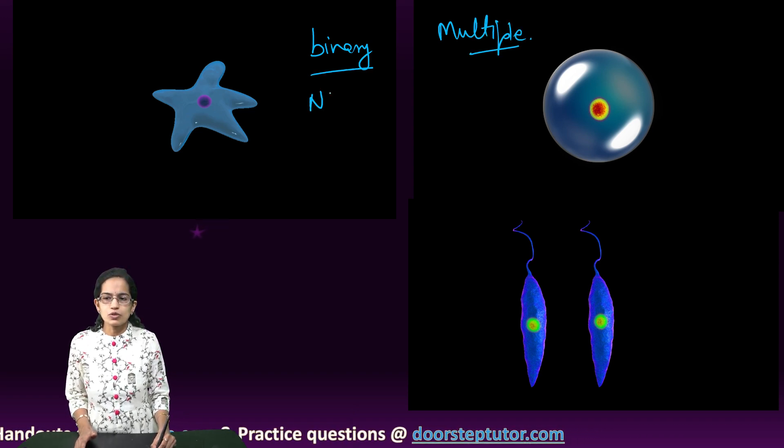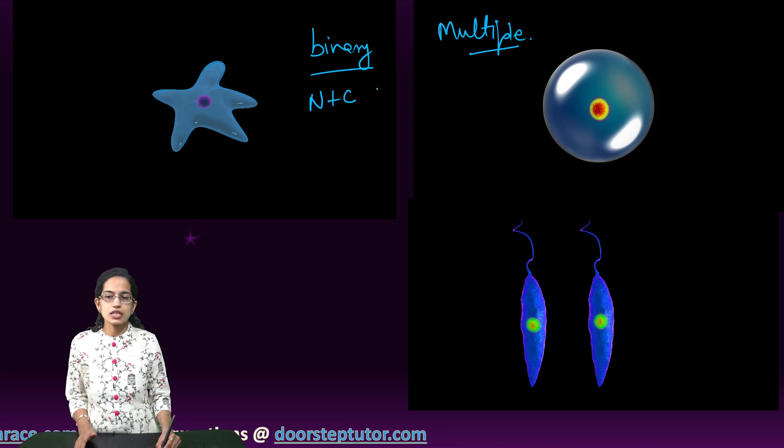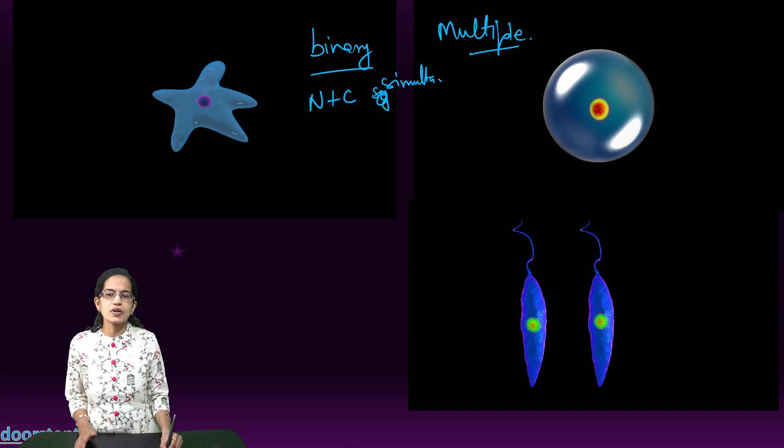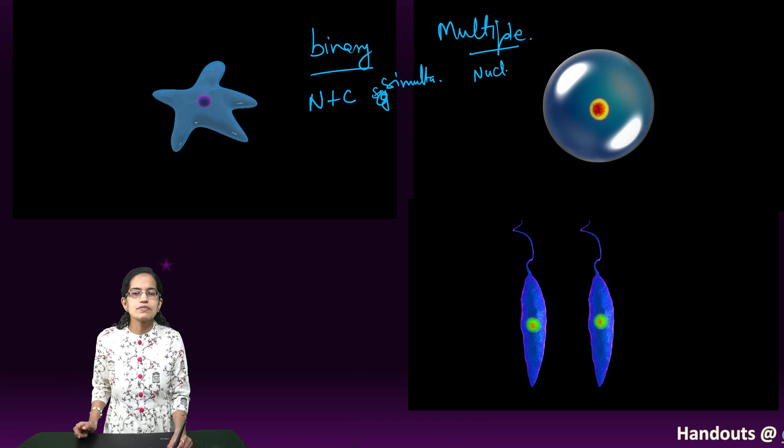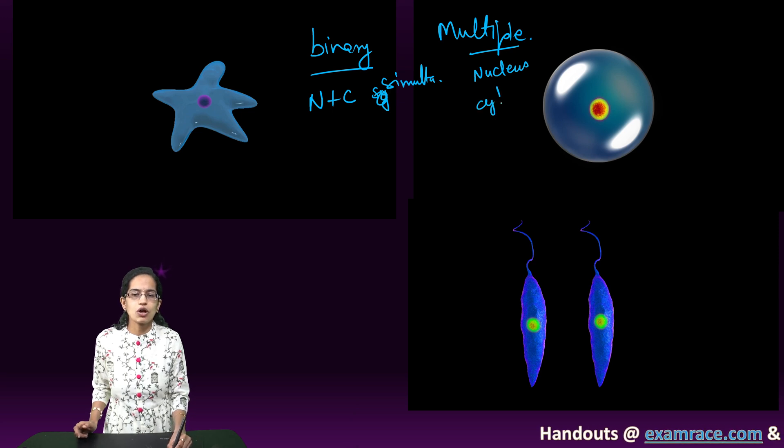Here the process of nucleus and cytoplasm division is simultaneous. It occurs continuously. However, in the case of multiple fission, first the nucleus divides, followed by the division of cytoplasm. So it's one after the other.